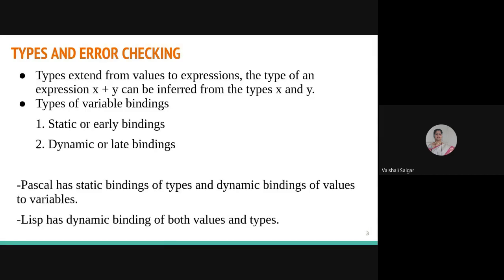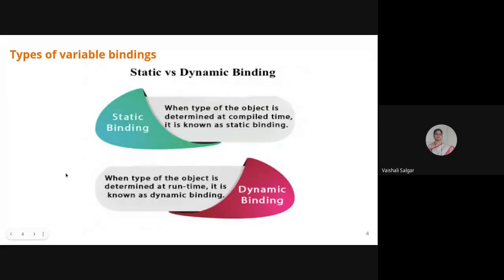Pascal has static binding of types and dynamic binding of values. When we declare a variable like 'int x', at static time the type of that variable is bound, but the actual values will be bound at runtime. Whereas a language like List has dynamic binding for both values and types. It is totally dependent on the programming language whether both the type and value will bind at dynamic time.